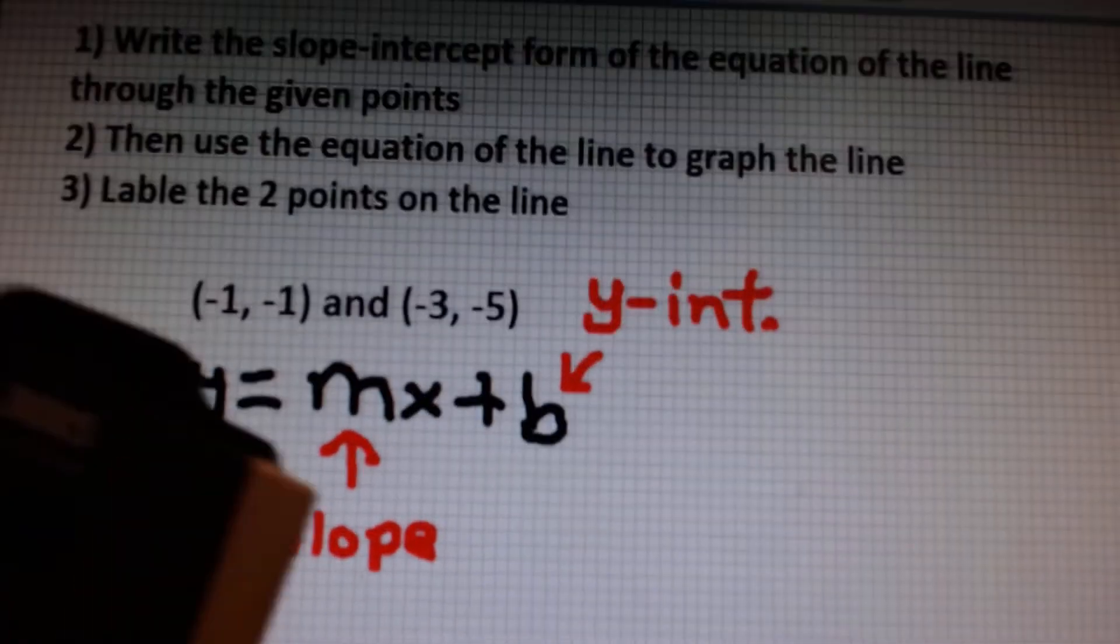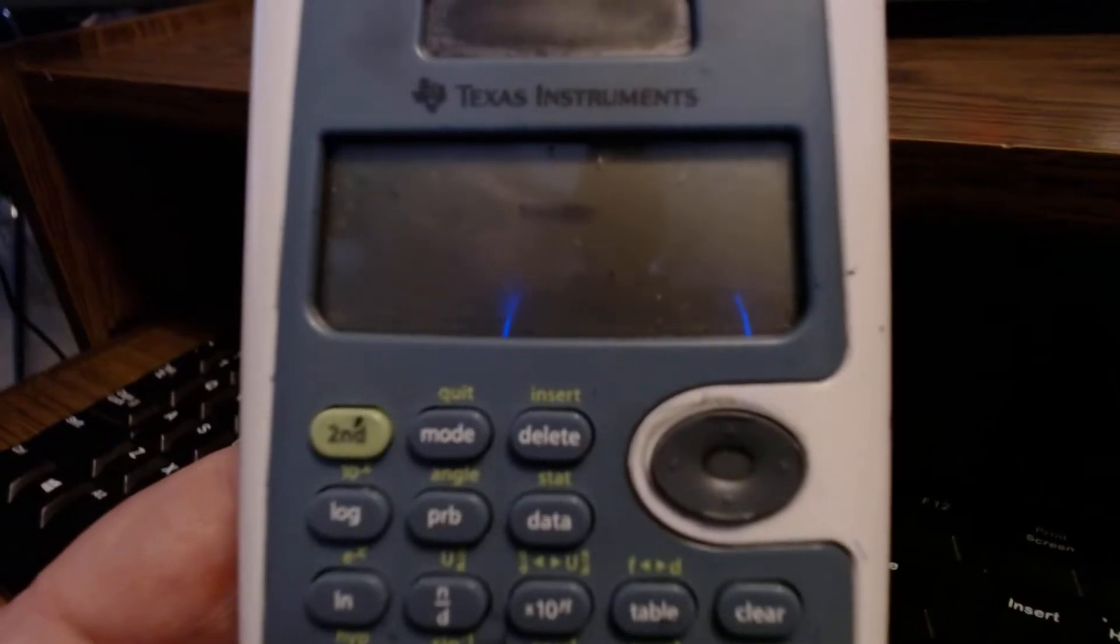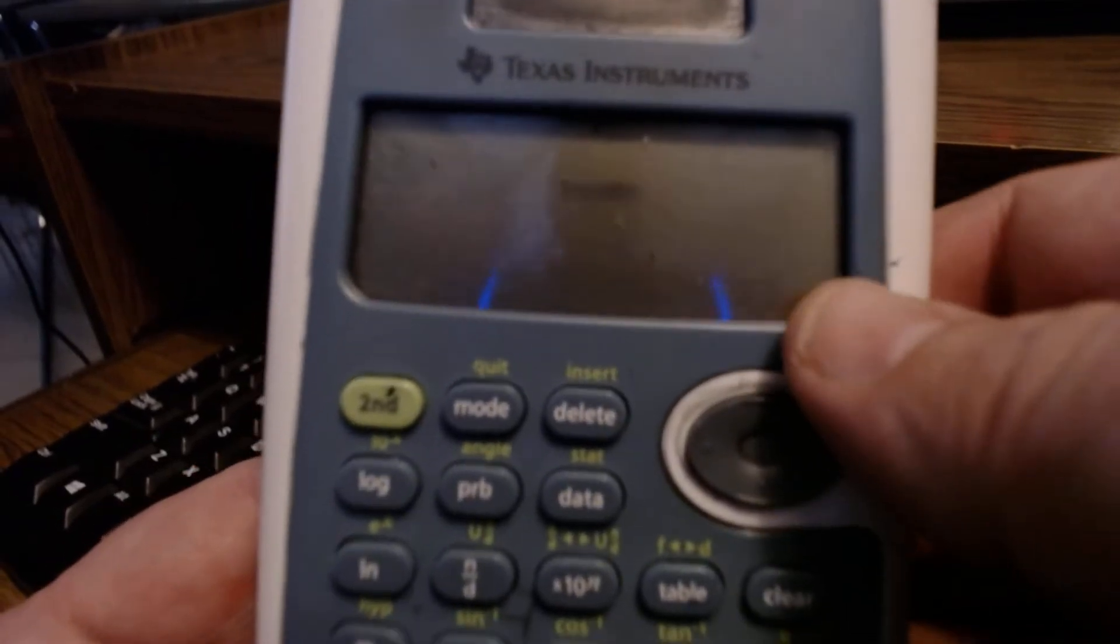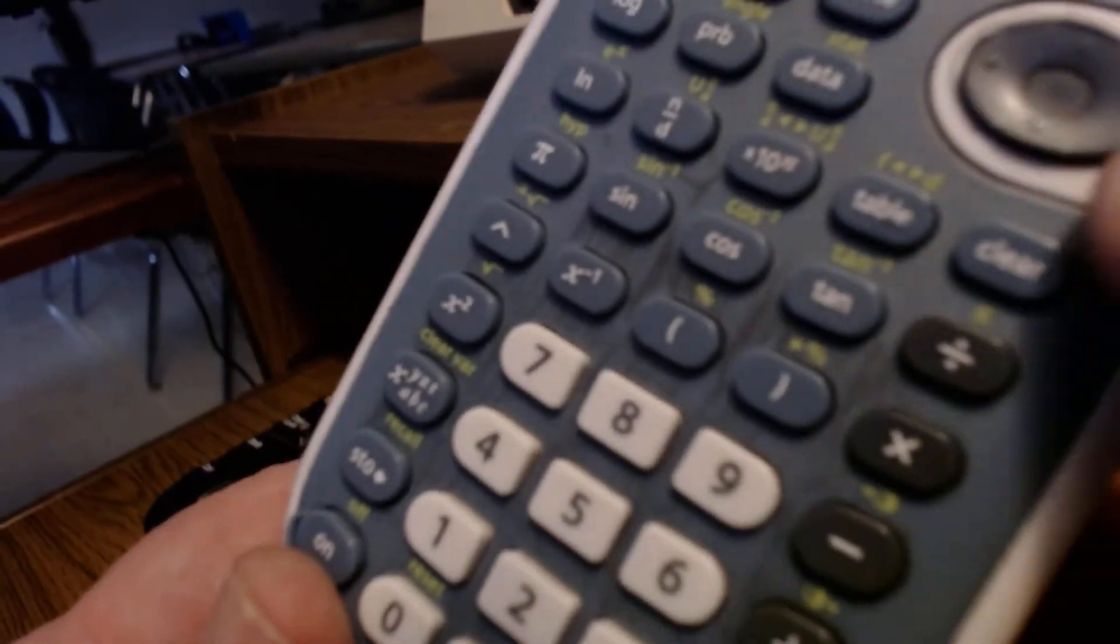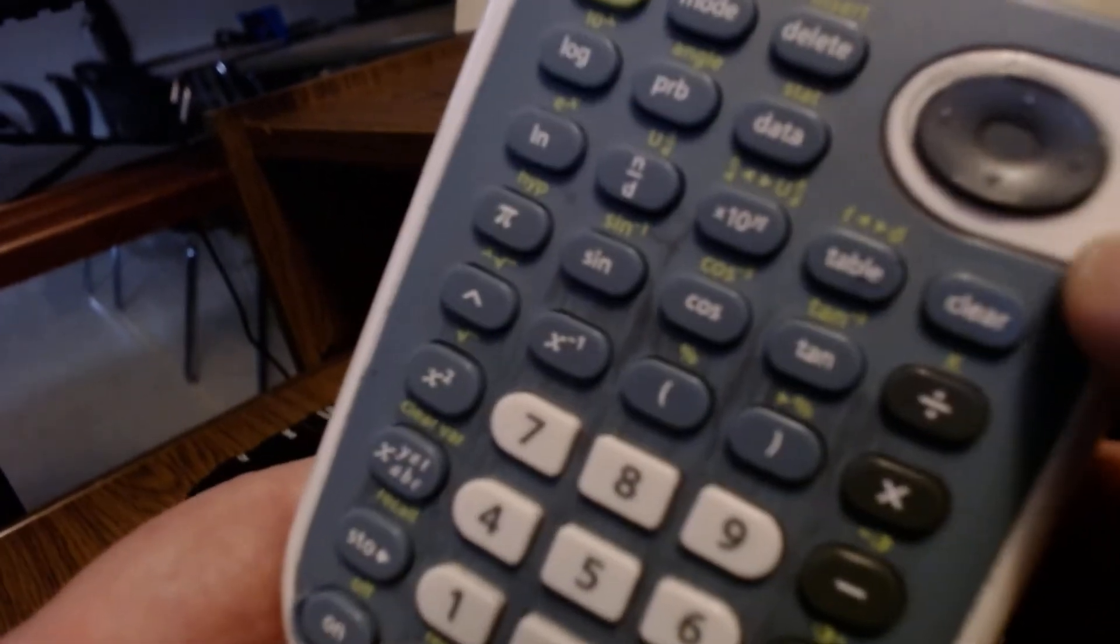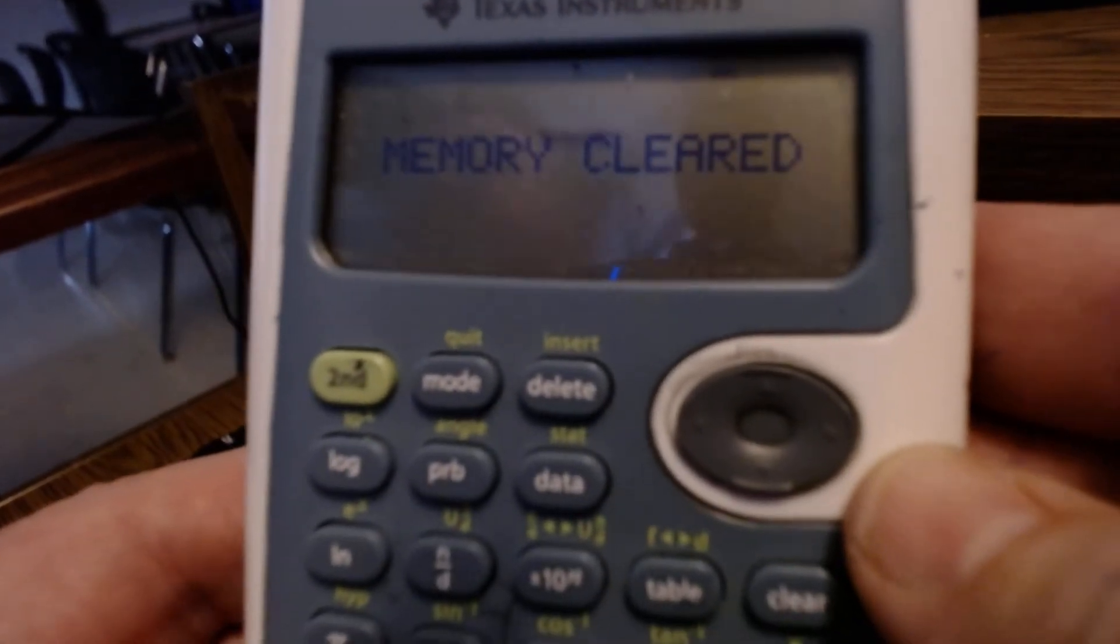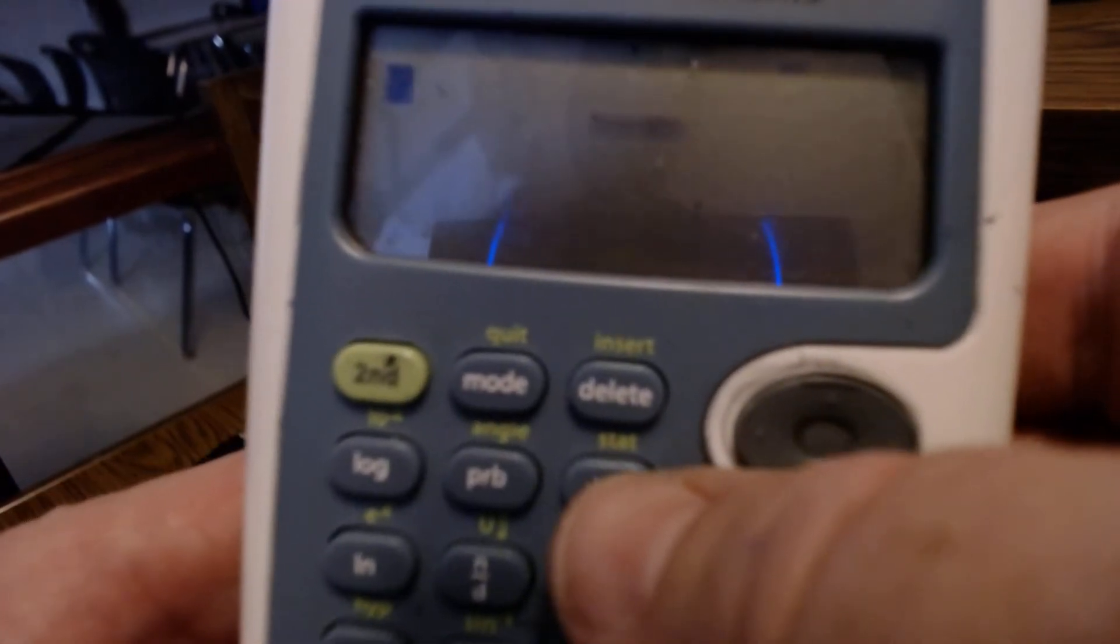I'm going to use the TI-30XS calculator and solve it with the data method. And these are the steps I'm going to use. First, I'm going to clear the memory by pushing on and clear at the same time. Then I release at the same time. It'll say memory clear on my calculator. Then I'll push clear.